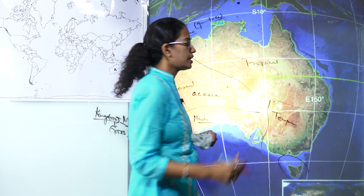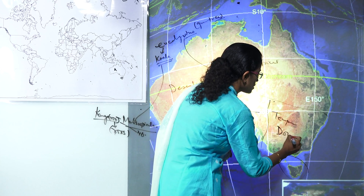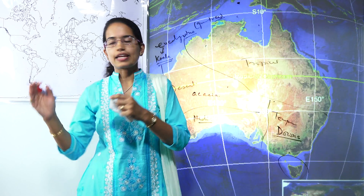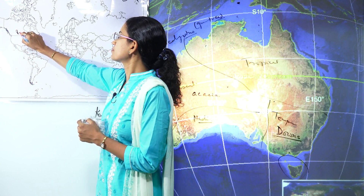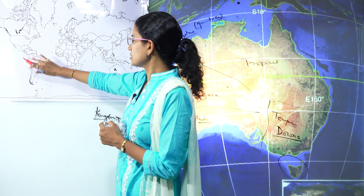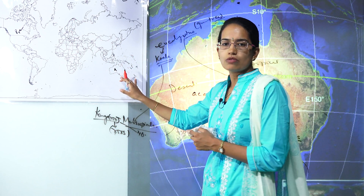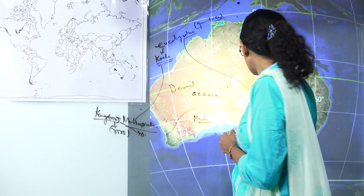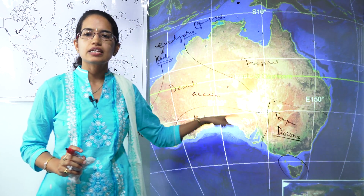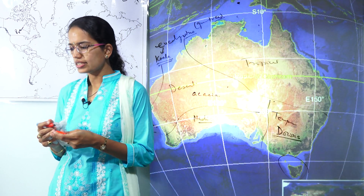In the temperate region you have grasslands known as 'downs.' When we talk about grasslands — in America you have prairies, in South America you have pampas, in Europe you have steppes, and in Australia you have downs. These downs are present in the temperate region, which is one of the most fertile areas drained by the Murray-Darling River.